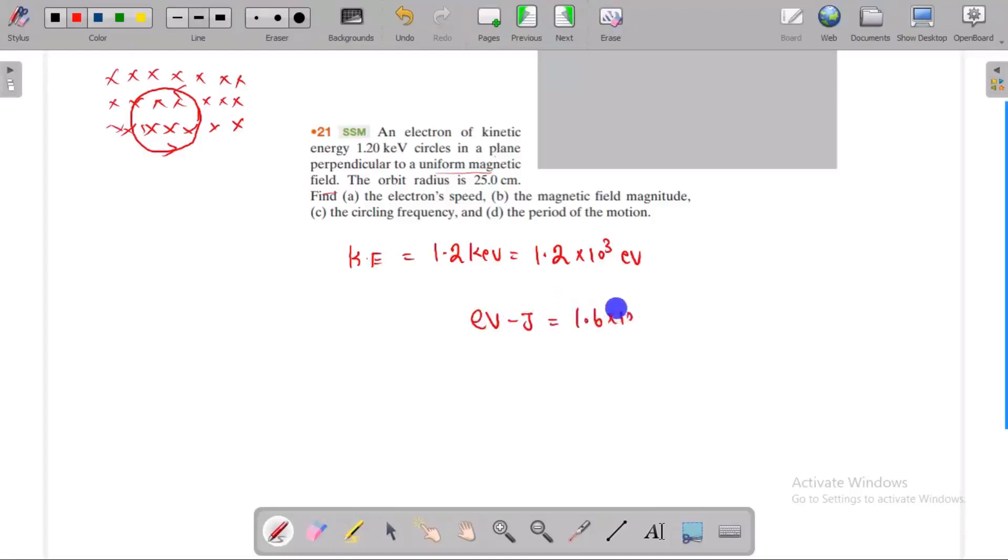To convert to joules: 1 electron volt equals 1.6 × 10⁻¹⁹ joules. So the kinetic energy is 1.2 × 10³ × 1.6 × 10⁻¹⁹ joules. The orbit radius is 25 centimeters, converted to meters.